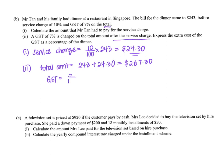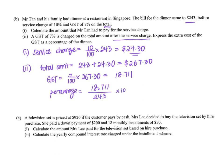Now 7% GST on $267.30 gives $18.711. They want us to express this as a percentage of the dinner itself ($243). So $18.711 divided by $243 times 100% gives 7.7%.